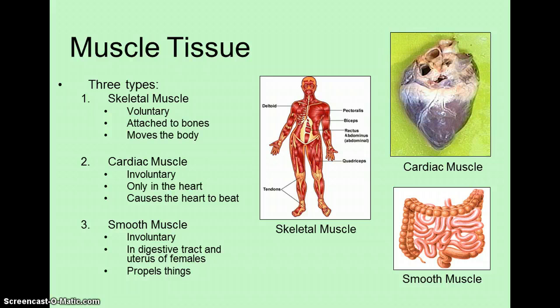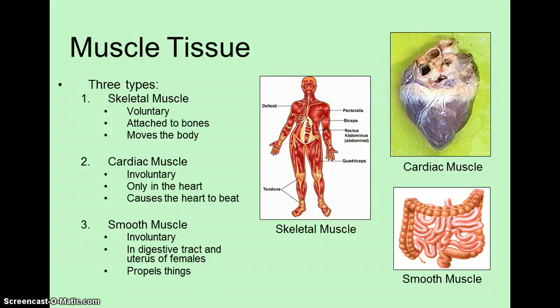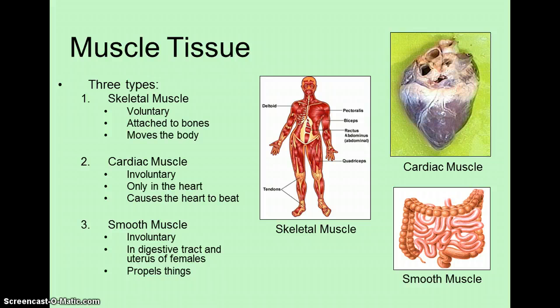Skeletal muscle is the only type of muscle that is voluntary, meaning that it is consciously controlled. In order for us to contract skeletal muscle, we have to plan the movement with our brains. We become very good at this and may not really notice it, but the contraction of this type of muscle is controlled by the brain and there is active planning that goes into it.